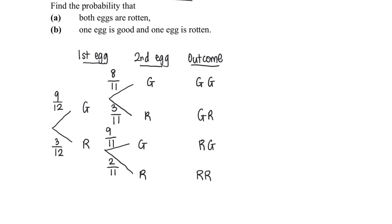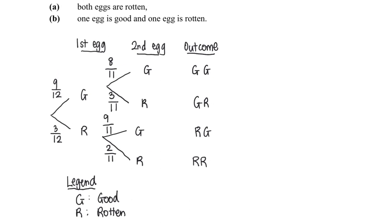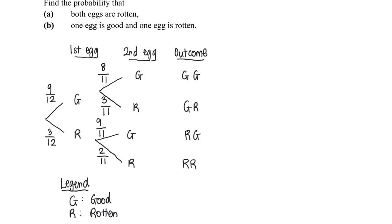And also do indicate in the legend. So people know what is G and what is R. G represents good. R represents rotten. And with that, we can get ready to solve the problem.